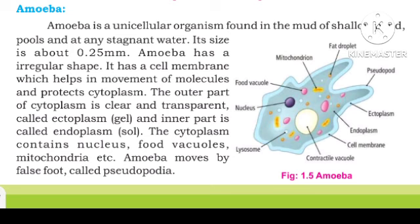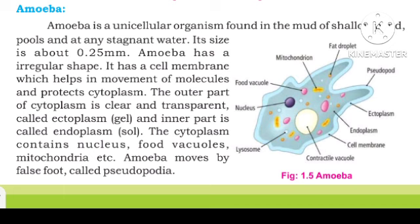Amoeba is a unicellular organism. It has a cell membrane to protect the cell, cytoplasm which is a liquid solution inside, nuclear material, food vacuoles, and mitochondria which produce energy. Amoeba moves by pseudopodia, which are finger-like projections used for movement from one place to another.